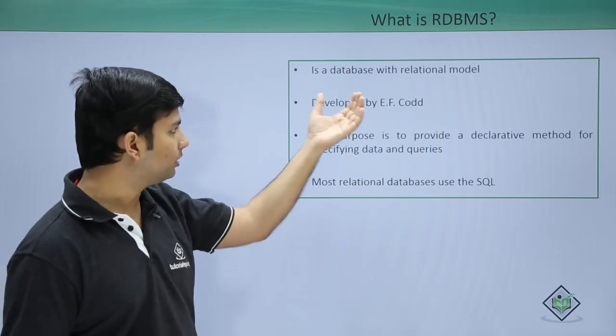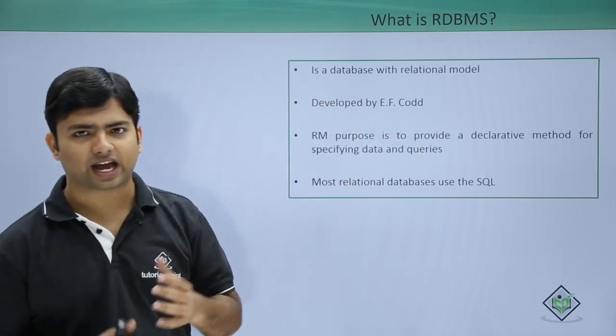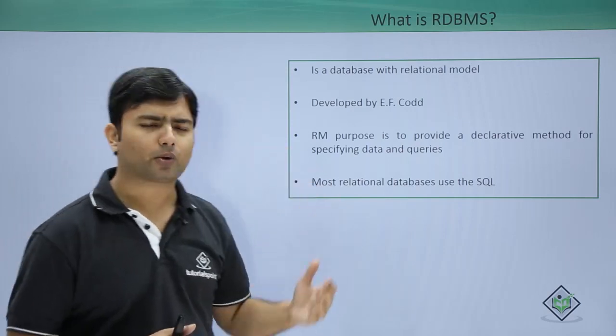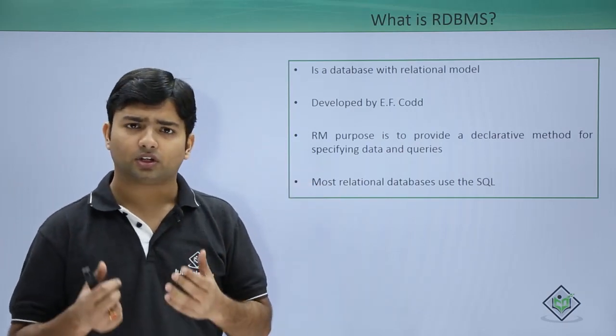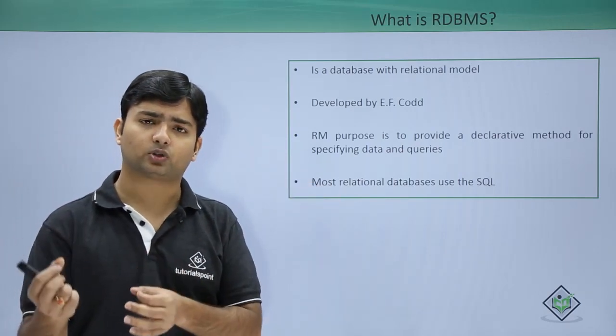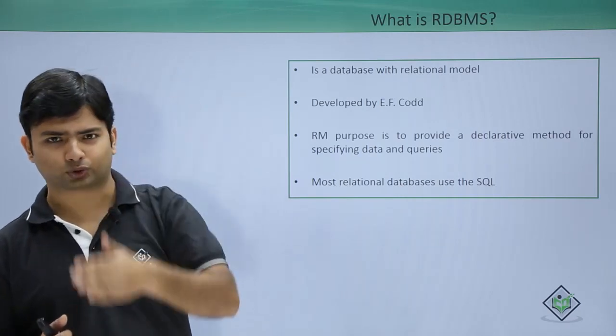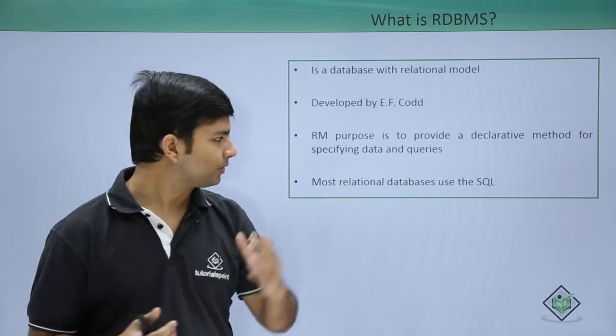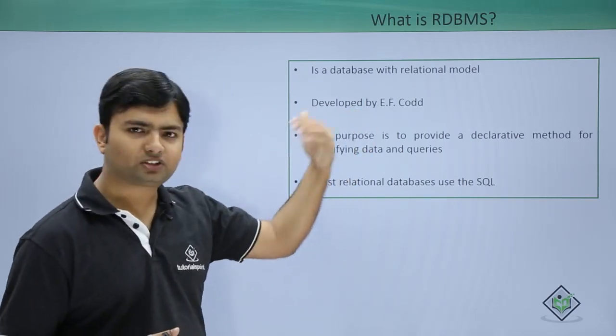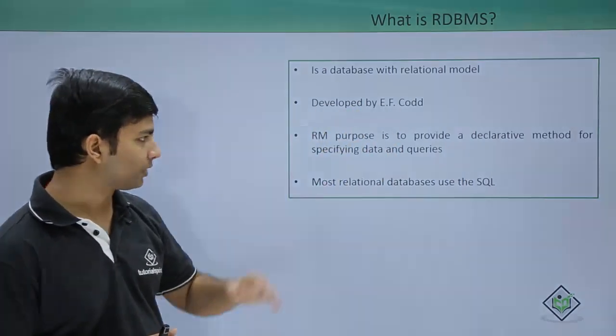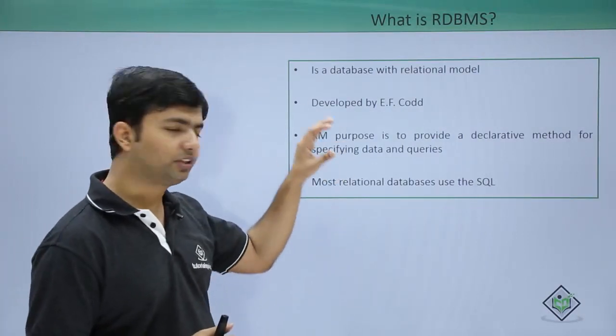RDBMS was written and defined by E.F. Codd, who was a research scientist in IBM. He provided some rules - 13 rules - using which you can actually deal with relational databases. The rules begin with Rule 0 to Rule 12, so in total it is 13 rules.